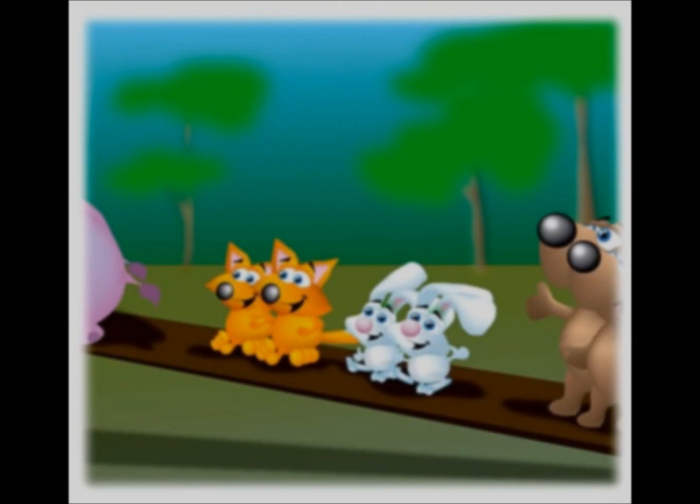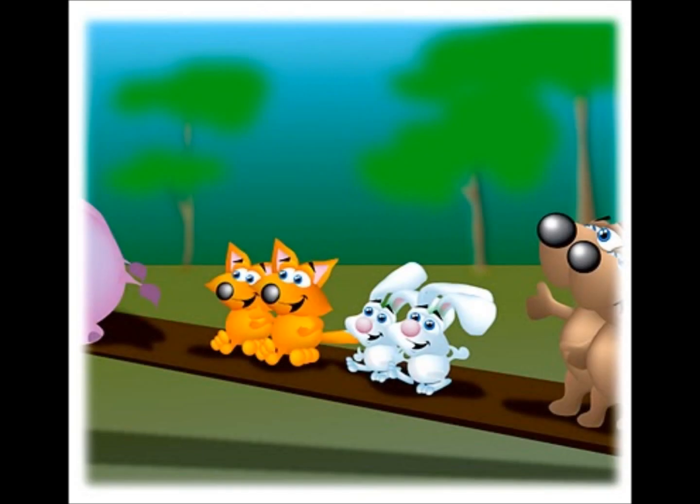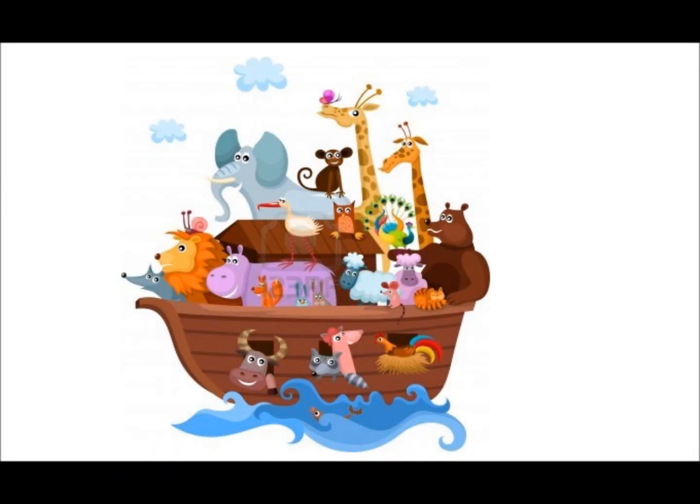Then he gathered up all of the creatures and animals two by two. Then he took all of his family, because God told him to. And then the rains came from heaven for forty days and nights. And everyone in the whole world perished, because they did not do right. All together now.